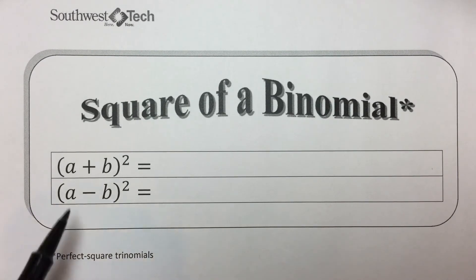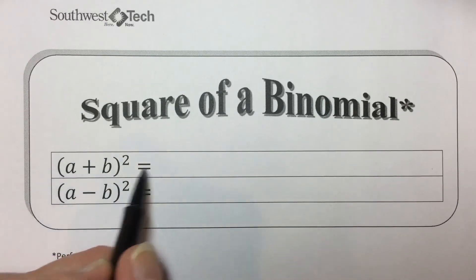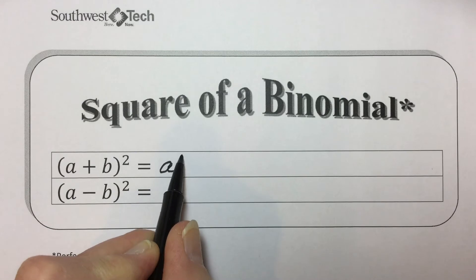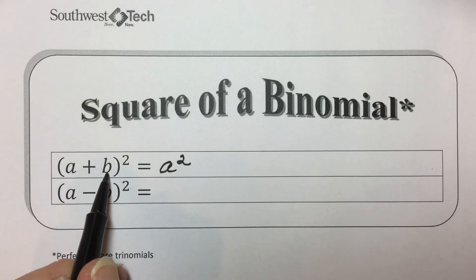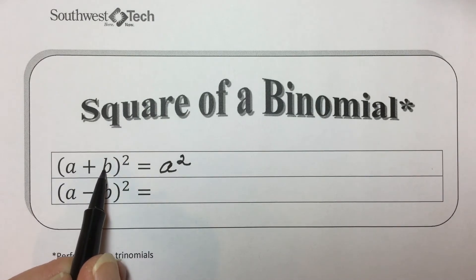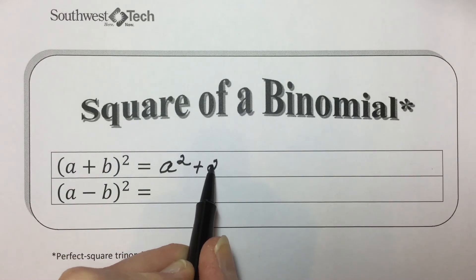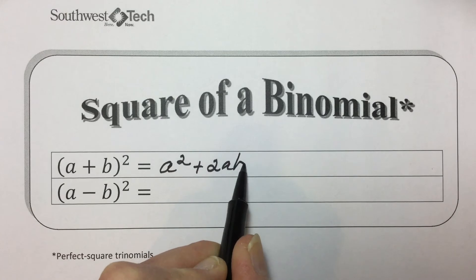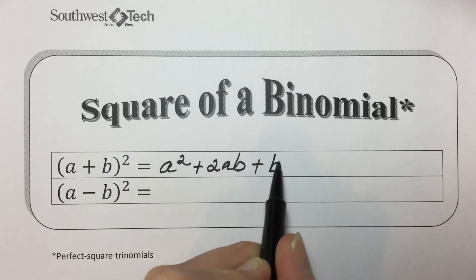The square of a binomial, (a + b) squared, is the square of the first term — a squared — plus twice the product of the two terms: multiplying a times b gives ab, and doubling that results in 2ab, plus the square of the last term, b squared.